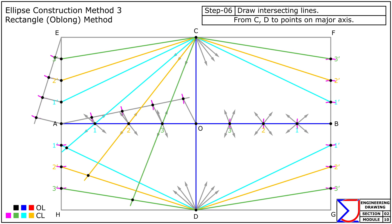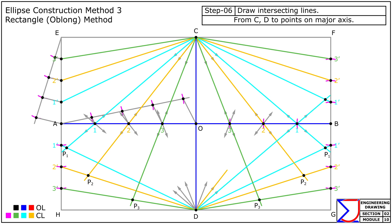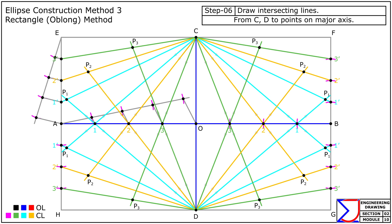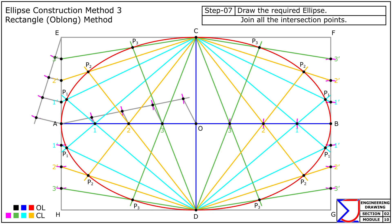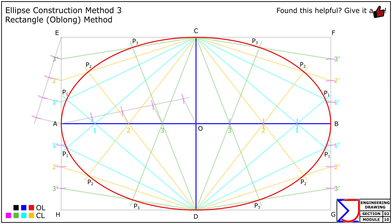Then from points C and D draw intersecting lines through the marked points on the major axis, ensuring they cross the previously drawn lines to locate the intersection points. Finally, connect all the intersection points with a smooth continuous curve to complete the required ellipse. This method ensures precision by translating axis divisions into coordinate intersections, producing an accurate and symmetrical ellipse without complex calculations.